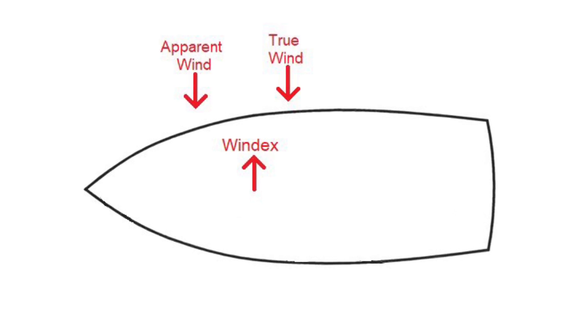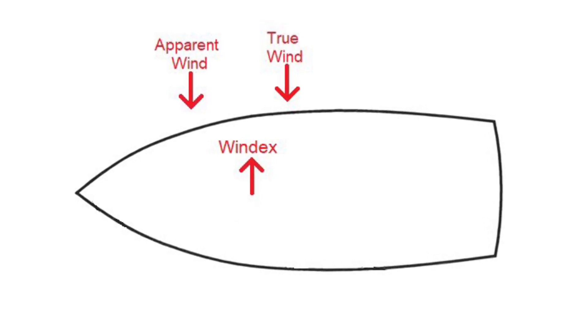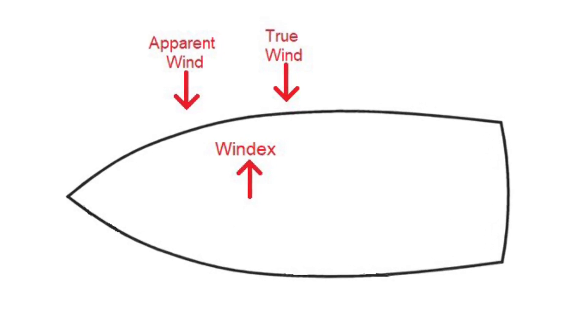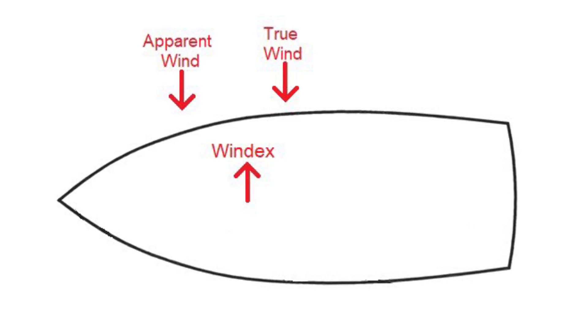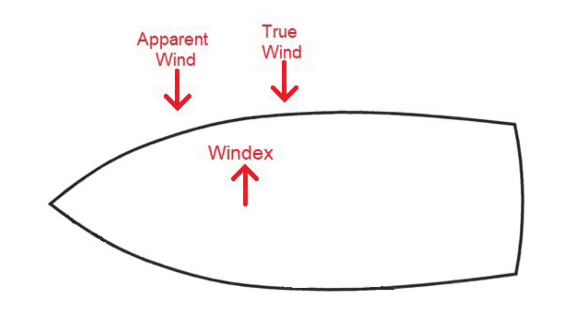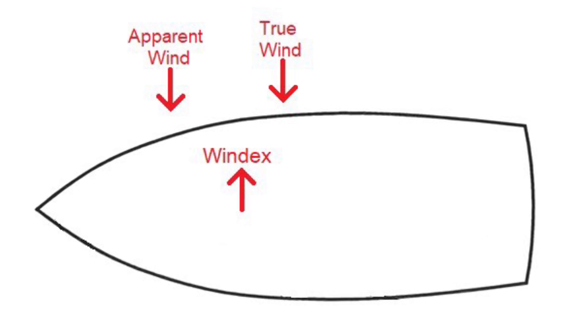But to understand why foiling boats don't use spinnakers, we need to talk a bit more about apparent wind versus true wind. When a boat is sitting stationary at the docks, the true wind equals the apparent wind, and the windex will point directly at the direction the true wind is coming from.